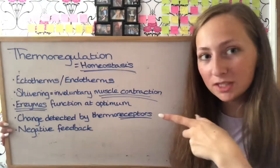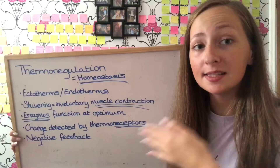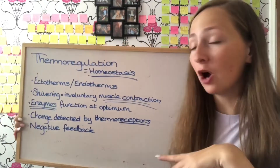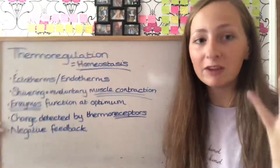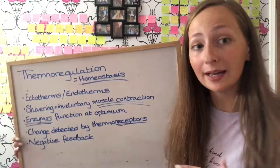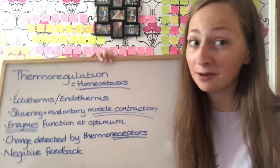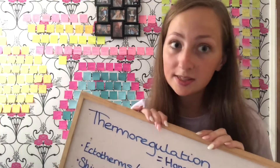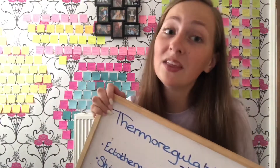Thermoregulation — I got most of this from Mr Pollock's old spec videos, so check those out. Thermoregulation is a type of homeostasis, so you can always link it back to homeostasis, whether that's water potential or blood glucose. It's also the easiest to learn because it's in GCSE, just extended a bit, and you've got vasodilation and vasoconstriction to bring in too. Ectotherms are cold-blooded and endotherms are warm-blooded. The hypothalamus contains the thermoregulatory centre, divided into a heat gain centre and a heat loss centre. Thermoreceptors detect the stimulus and pass the signal to the hypothalamus, which activates a response via the autonomic nervous system through negative feedback.